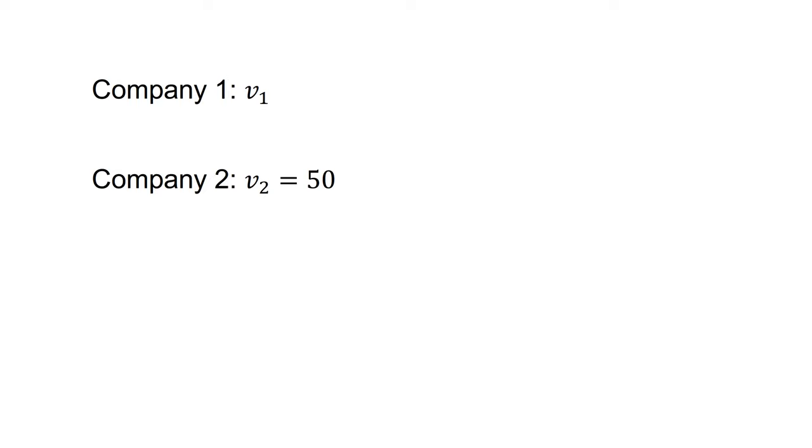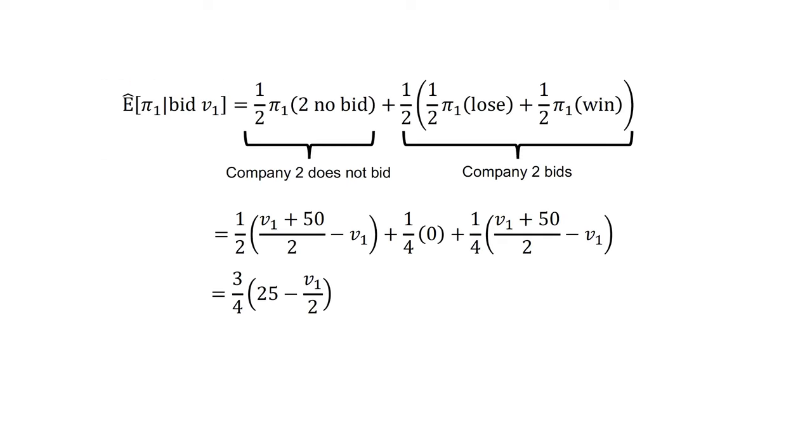Company 1's expected profit, if they bid V1, is as follows. The expected profit equals a half times the profit if Company 2 doesn't bid, plus a half times the two scenarios where Company 2 does bid, where Company 1 loses and Company 2 wins.